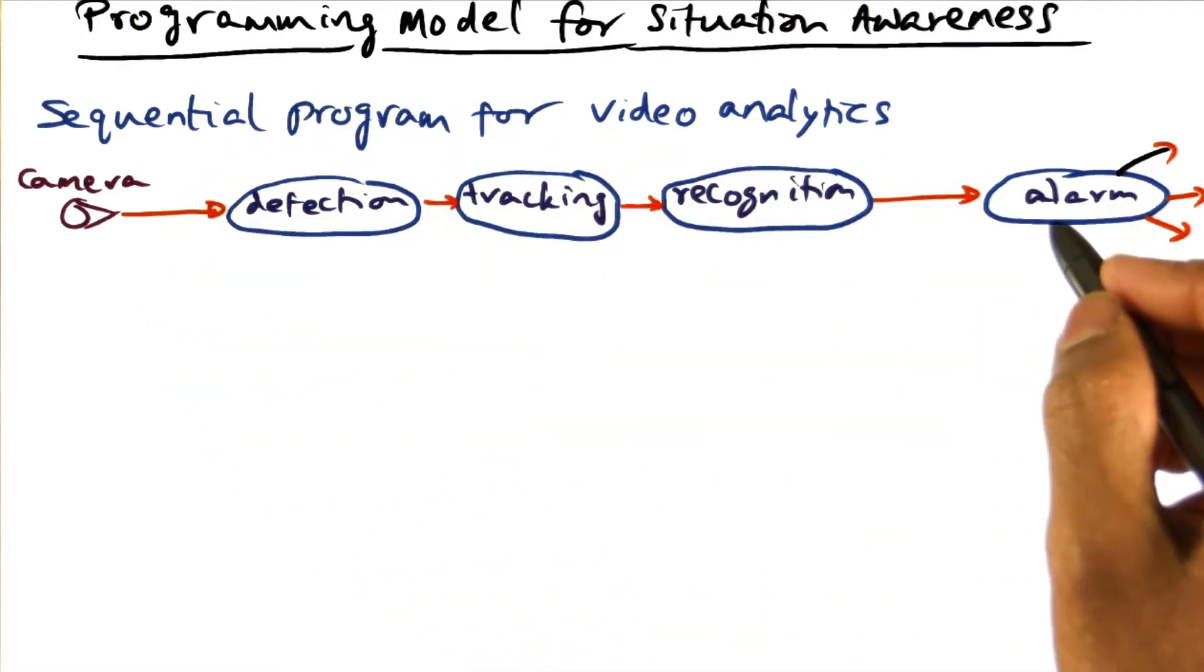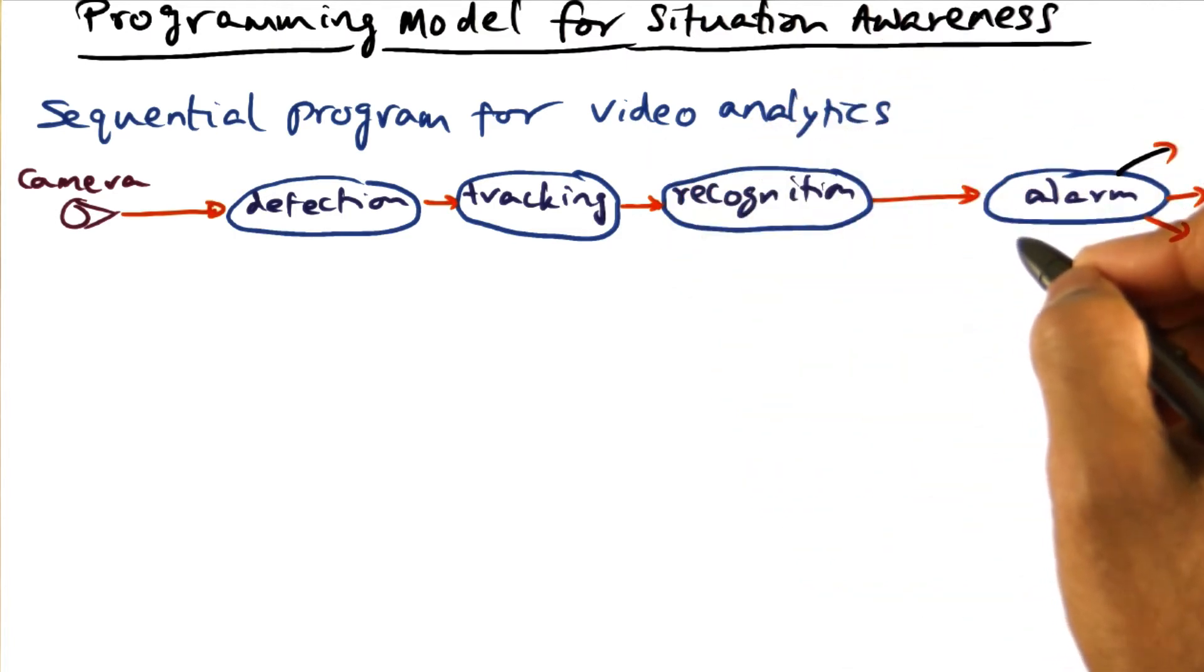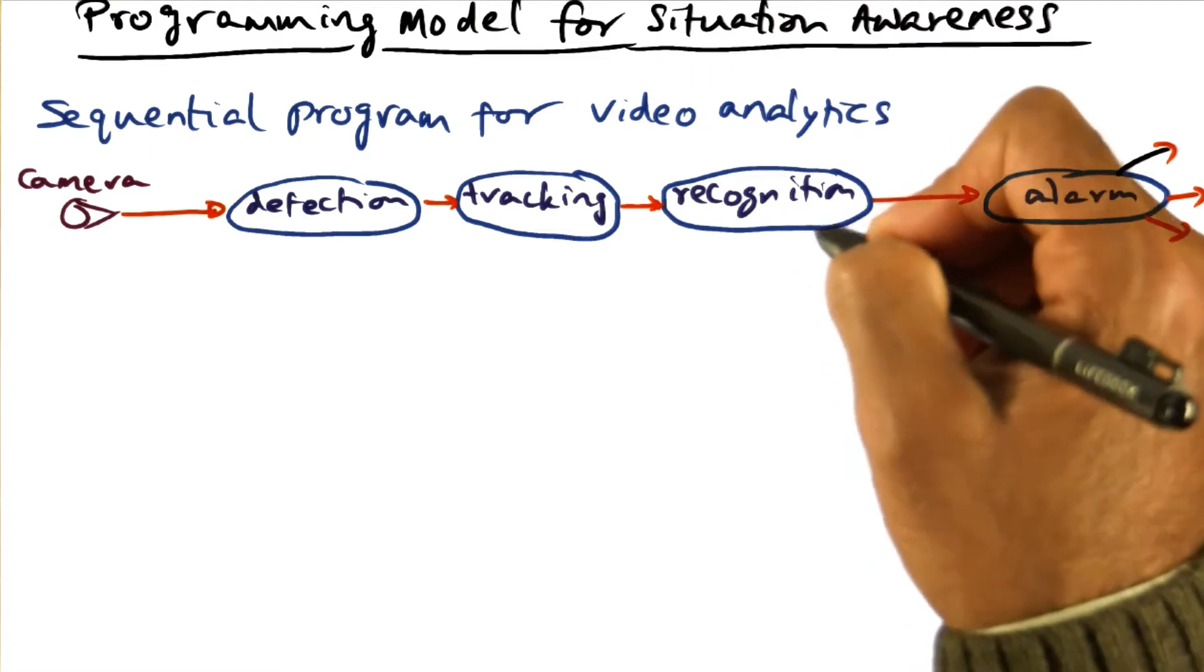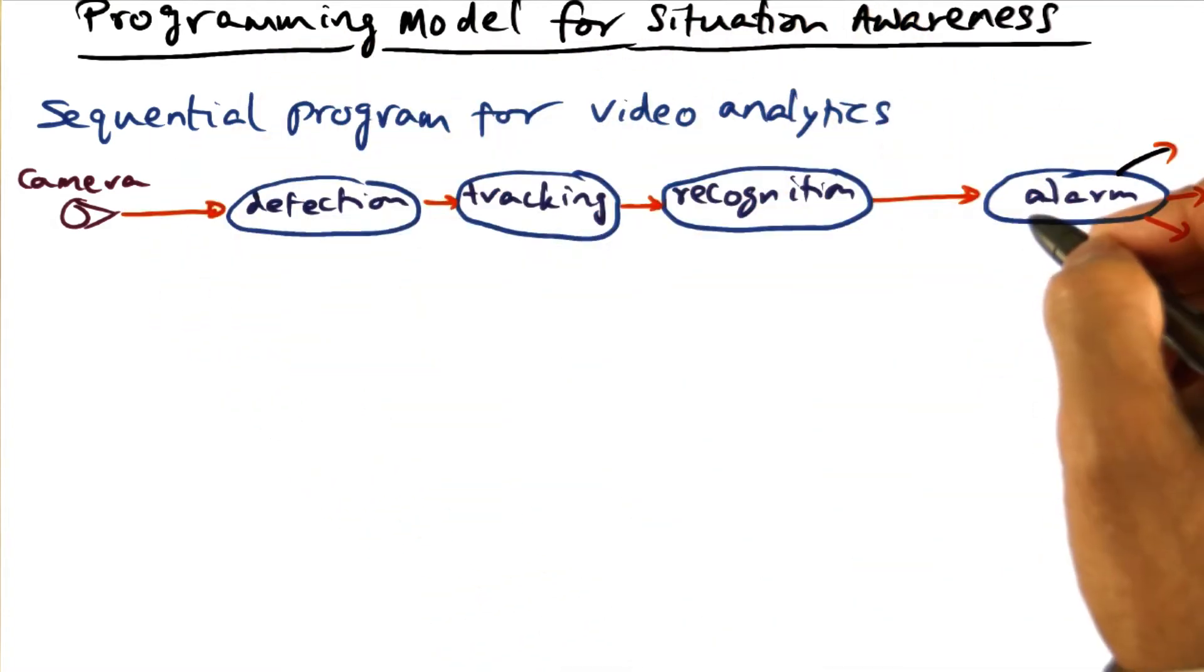So this is just a simple pipeline of tasks to illustrate what a domain expert may be doing in a video analytics application. Such a domain expert is an expert in writing detection algorithms and tracking algorithms and recognition algorithms so that they can process the video stream in real time to generate alarms.